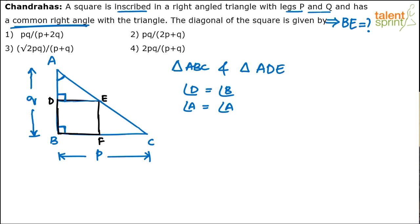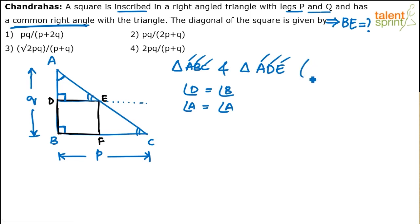Angle A is equal to angle A — both triangles share the common angle A. And since DE and BC are two parallel lines with AC as a transversal, angle C equals angle E. So since two angles of triangle ADE equal two angles of triangle ABC, the third angles are also equal, making them similar triangles.